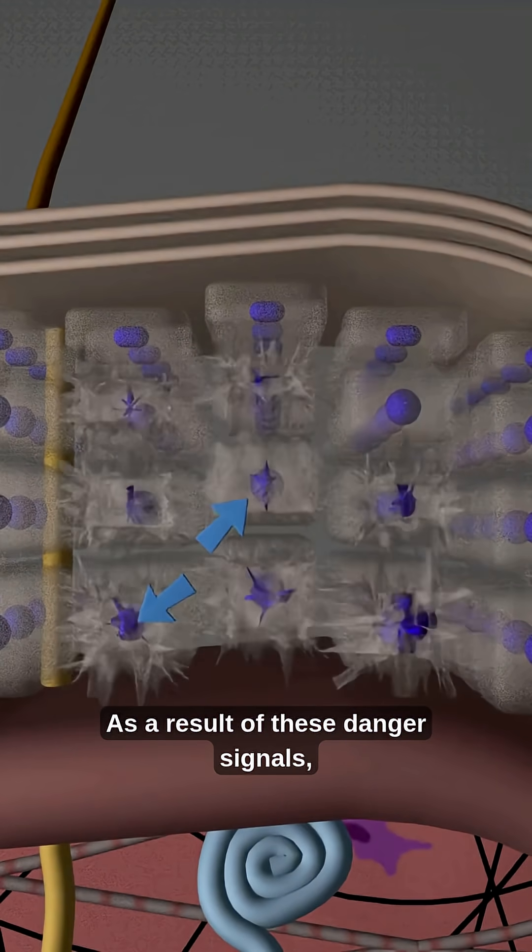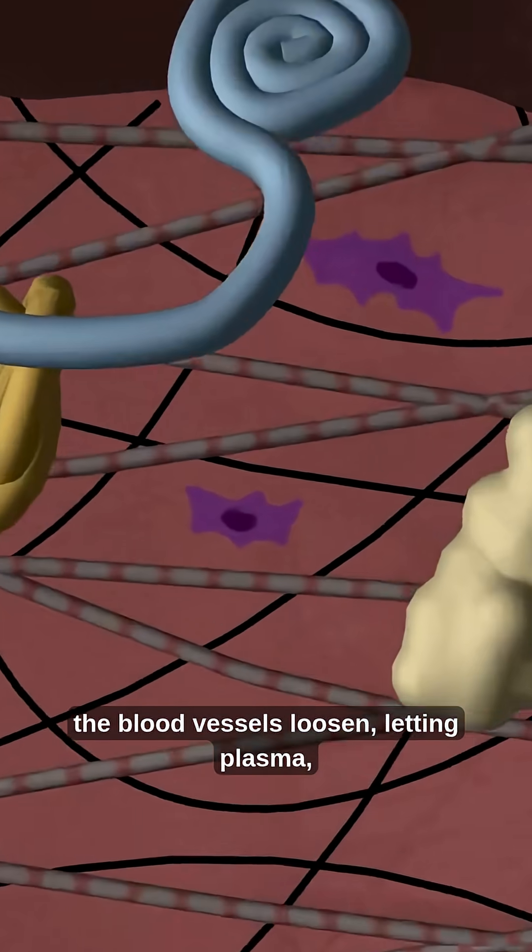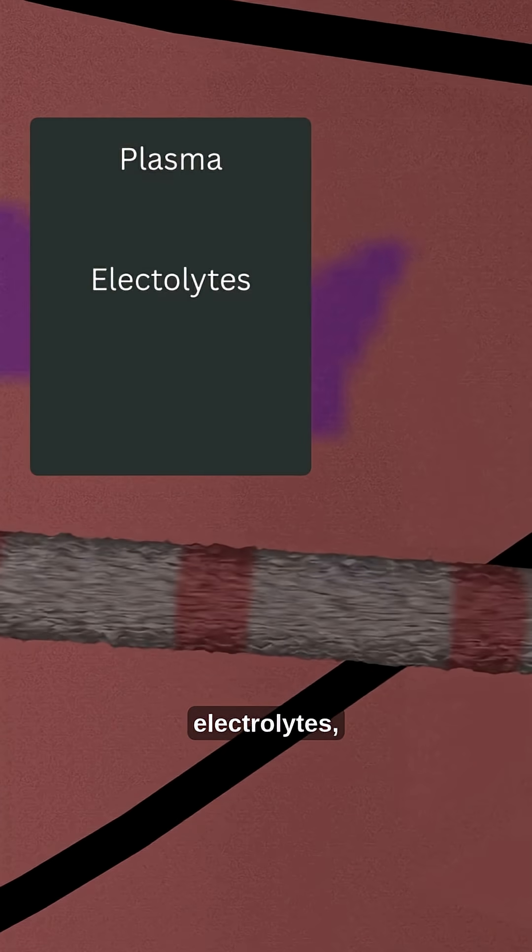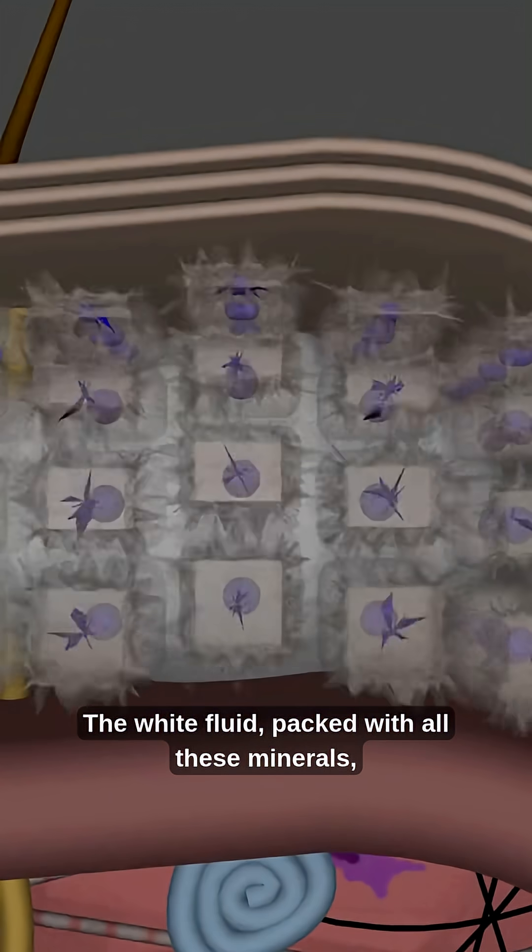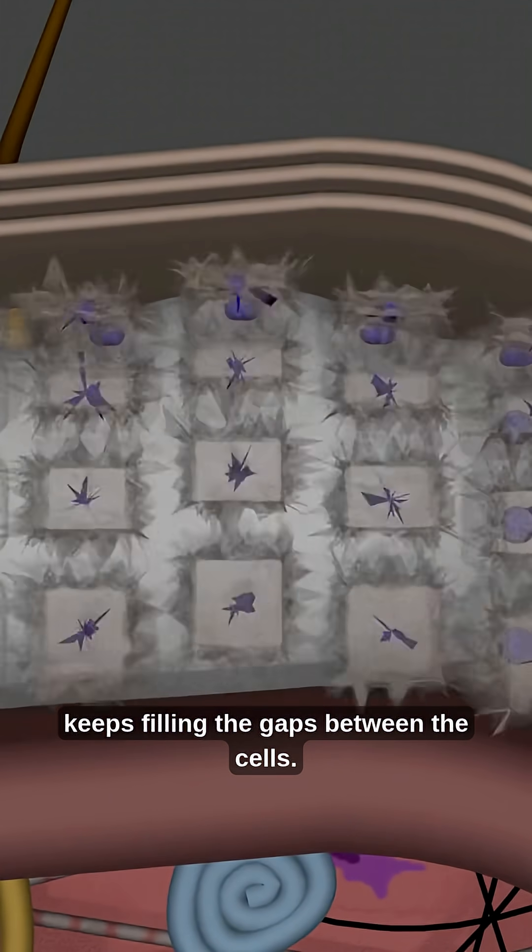The danger signal is sent. As a result of these danger signals, the blood vessels loosen, letting plasma, electrolytes, and proteins leak out and rush toward the burned area. The white fluid, packed with all these minerals, keeps filling the gaps between the cells.